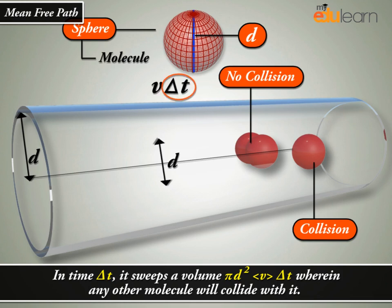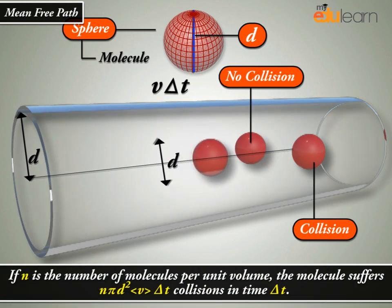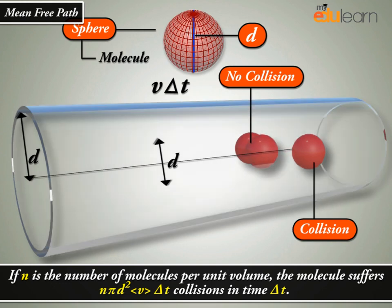In time Δt, it sweeps a volume πd² V Δt, wherein any other molecules will collide with it. If N is the number of molecules per unit volume, the molecule suffers N πd² V Δt collisions in time Δt.